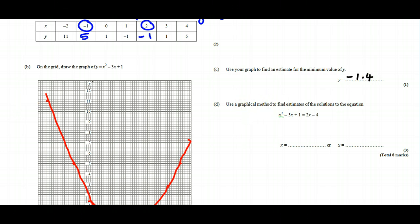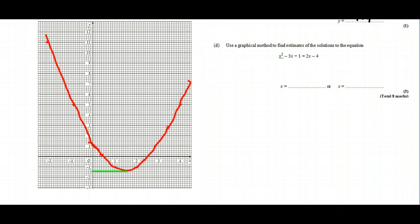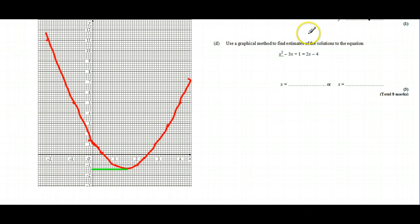The next question says use a graphical method to find estimates for the solution to the equation. Now you should notice that you've got x² - 3x + 1, so that's the equation we've already drawn, and actually it would make more sense to me to reference this one in red. Now in blue, we've got it equal to a different equation, which could be called y = 2x - 4. So that's what we're going to need to plot: the equation y = 2x - 4.